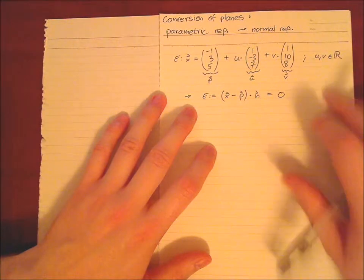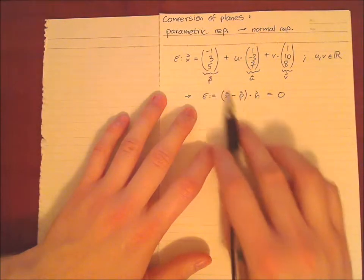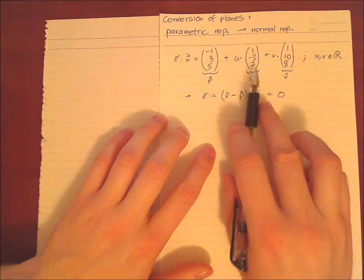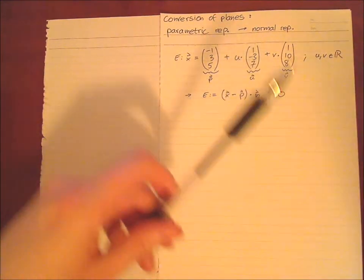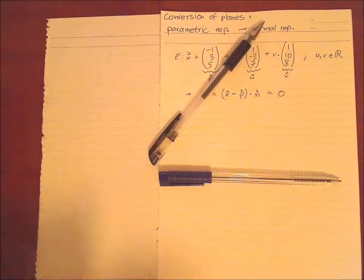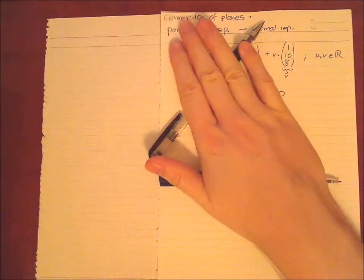So how to get the normal vector? p we already have, we can just take the vector from above, but the normal vector we don't know. But we have two vectors given which are part of the plane, so we know just some vectors, two vectors in the plane.